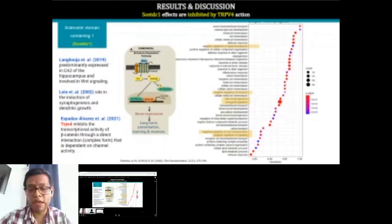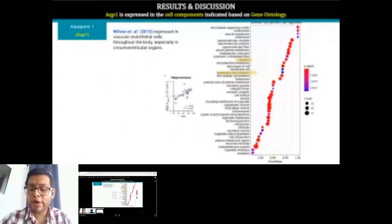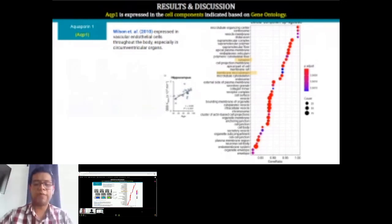We also found the increased expression of aquaporin-1, which has been reported in some neurodegenerative diseases such as Alzheimer's disease. It has also been reported with cognitive impairment because it appears that its role is related with the permeability of the blood-brain barrier.